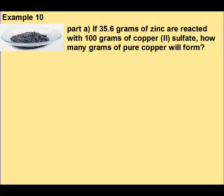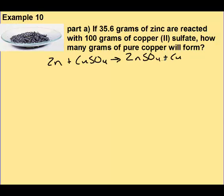This problem looks similar to what we were doing before. The difference is they give you 35.6 grams of zinc and 100 grams of copper sulfate — so they give you amounts of both reactants. We have to figure out which one is going to produce the smaller amount of copper. In a limiting reactant problem, first we're going to ignore the 100 grams of copper sulfate and just convert 35.6 grams of zinc to grams of copper, since that's what we're trying to get our answer in.